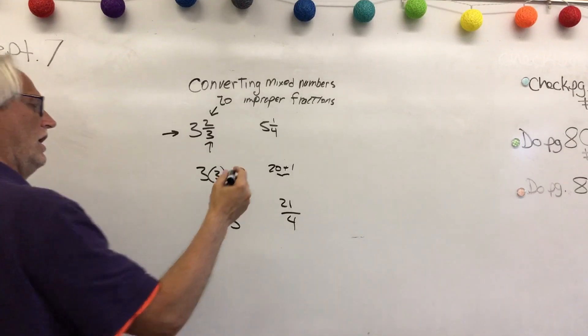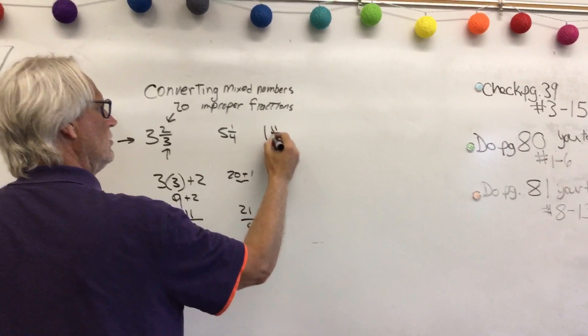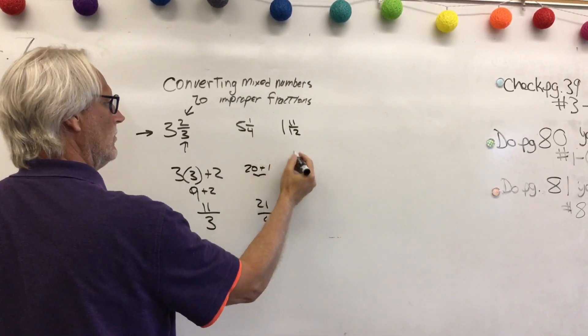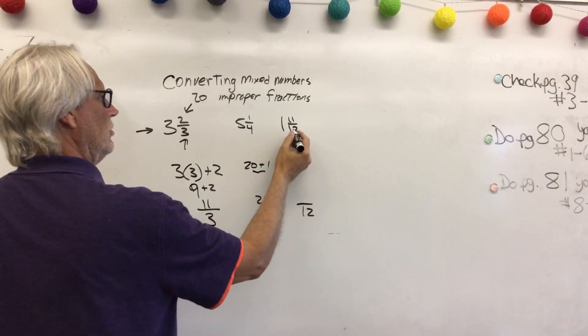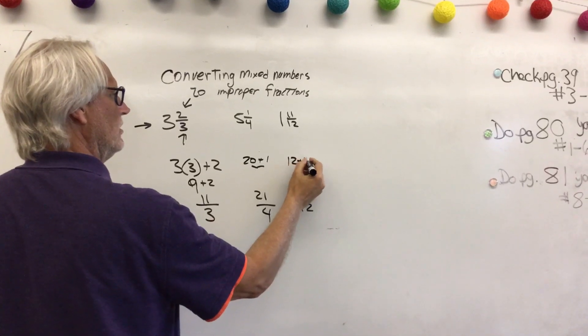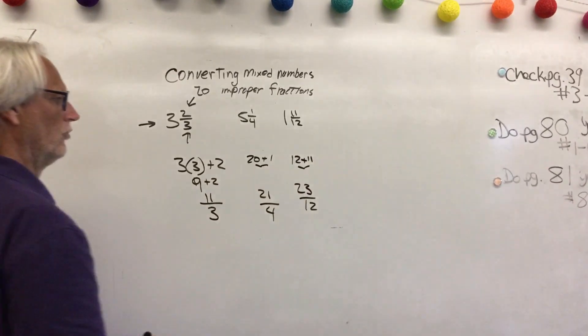Let's try 1 and 11 twelfths. So whole number, my denominator is 12. So 12 times 1, which is 12, plus 11, which is 23 over 12.